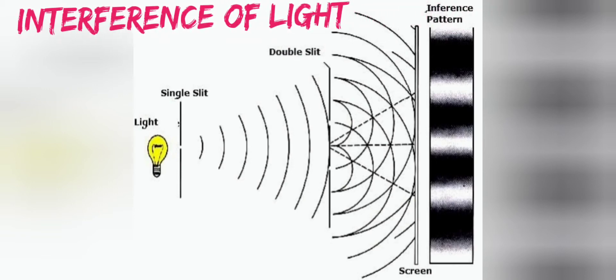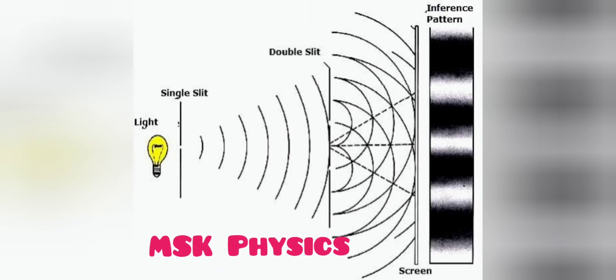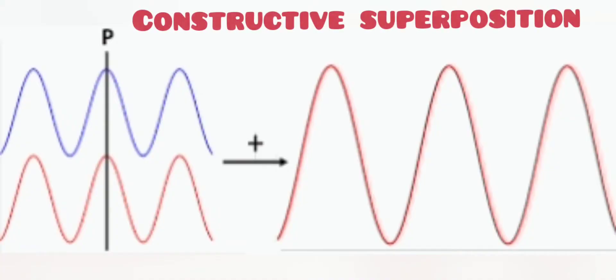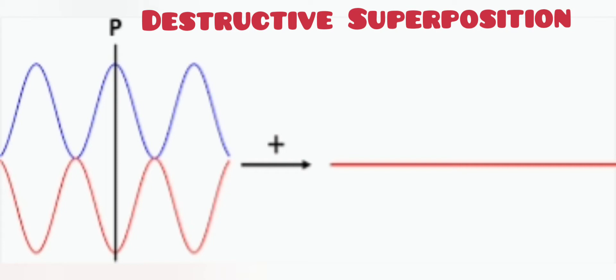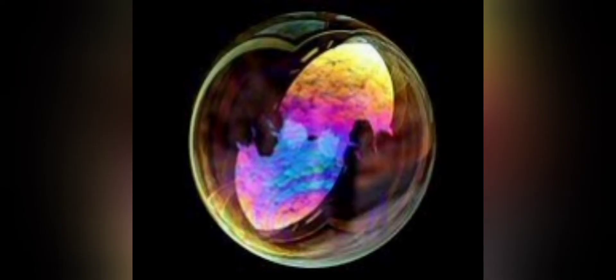In this video we shall talk about interference of light, which is the most important phenomenon supporting the wave nature of light. Before we start, let us look at the superposition of two waves. When two waves superpose such that crest falls on crest and trough falls on trough, they constructively interfere. When crest falls on trough, they destructively interfere, and minimum intensity is found.